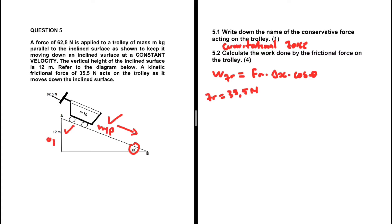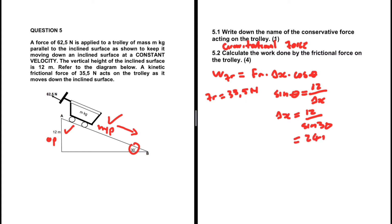To find delta x, we use sine: sin θ = opposite / hypotenuse. The opposite side is the height of 12 meters and the hypotenuse is delta x. With θ = 30 degrees, delta x = 12 / sin(30) = 24 meters. So from A to B is 24 meters. Now we have the frictional force and delta x, so we can substitute to find the work done by the frictional force.